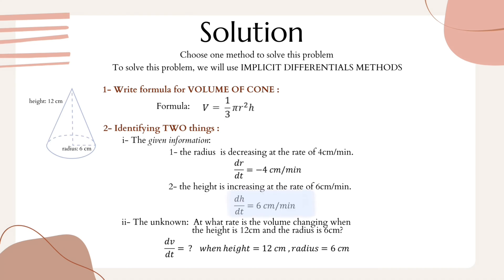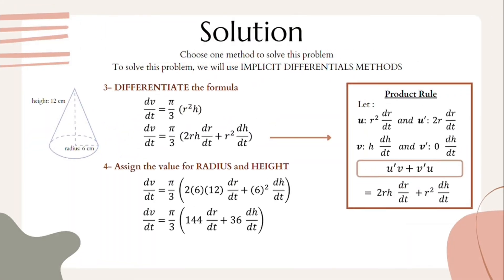For the unknown information: at what rate is the volume changing when the height is 12 centimeters and the radius is 6 centimeters? We write dV/dt = ? with height h = 12 cm and radius r = 6 cm.